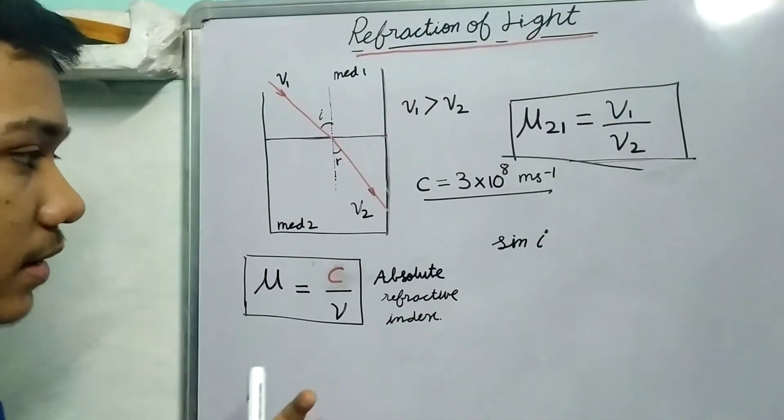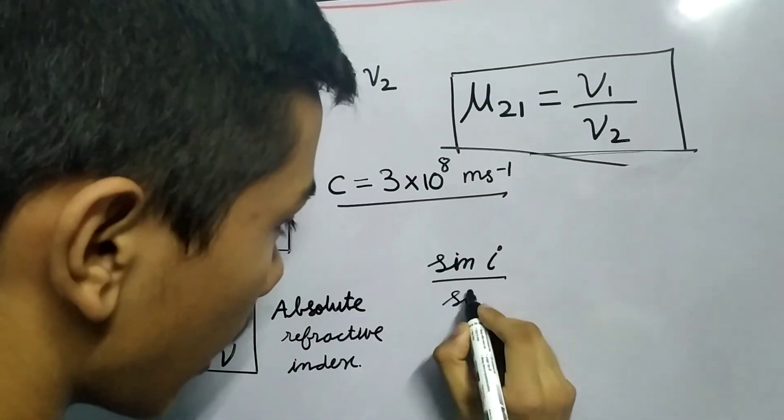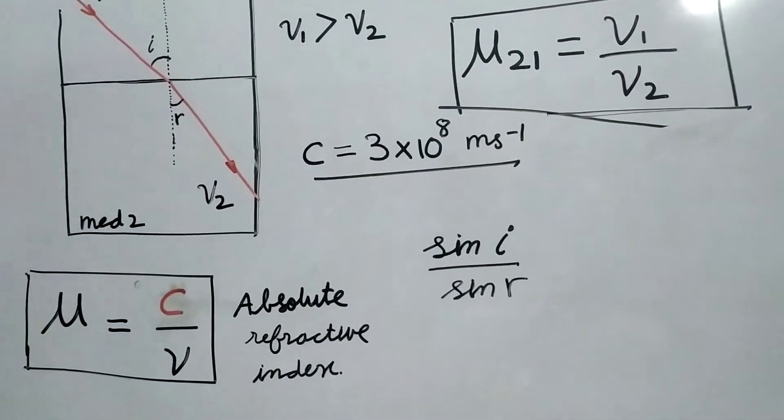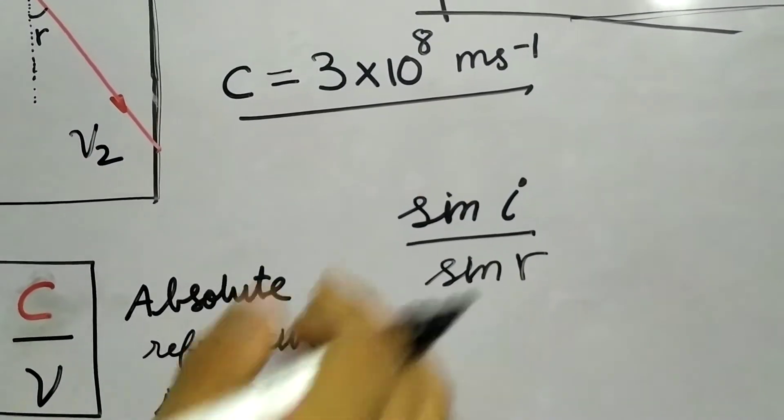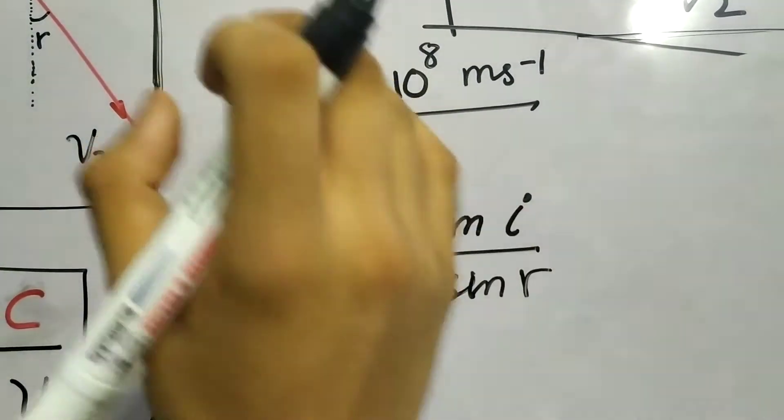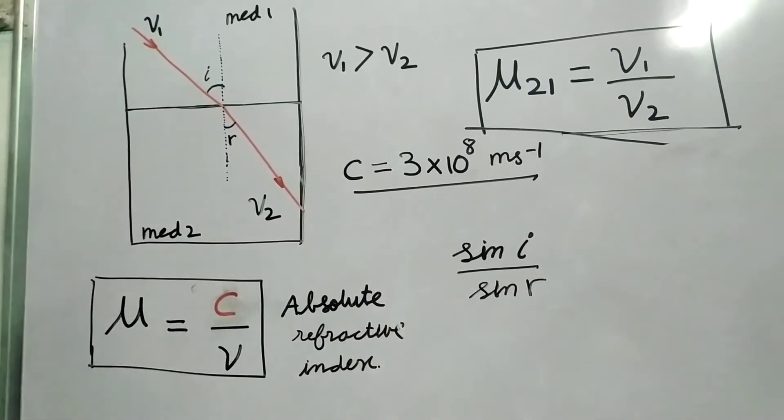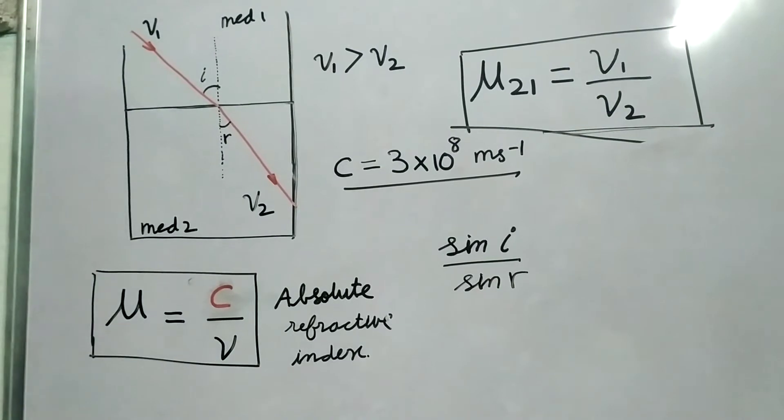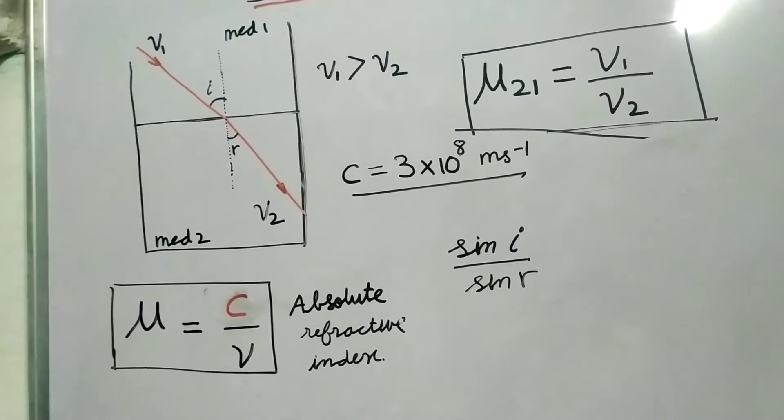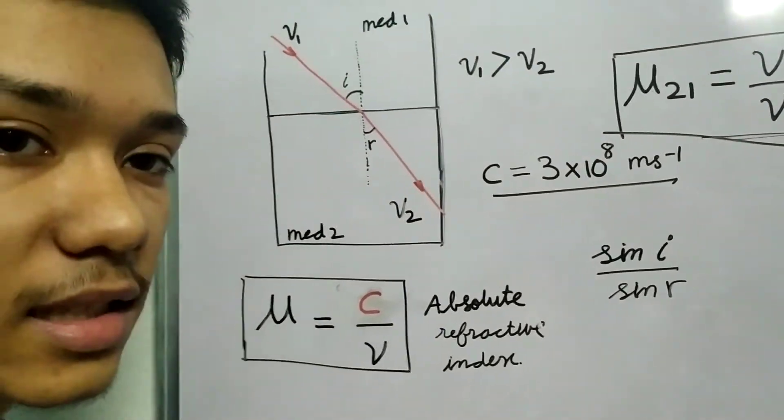Now, making medium 1 as vacuum, we get μ equals c divided by v, the velocity of light in the same medium. That's called the absolute refractive index. If you notice carefully in our experiment, as our angle of incidence increased, the angle of refraction also increased.